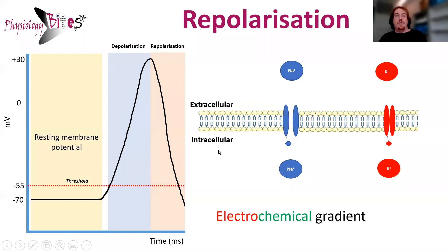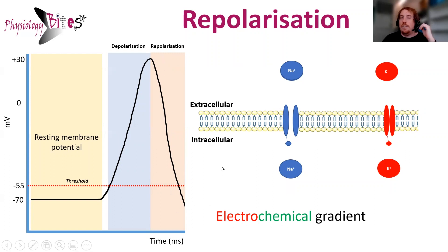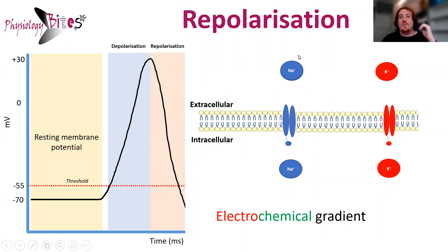Let's talk about the next step, which is repolarization. In repolarization, the charge goes essentially back down to, and even below, our resting levels. The reason for this is that during repolarization, the inside of the cell becomes nice and positively charged, which inactivates those sodium channels. So sodium will stop coming in, and we've lost that driving force moving positively charged ions into the cell.